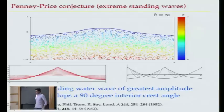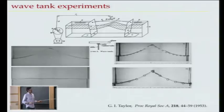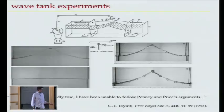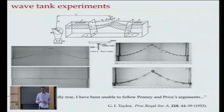Penny and Price picked 90 degrees, but their reasoning wasn't as clear as Stokes's. G.I. Taylor, one year later in 1953, actually built an apparatus to try to generate the singular standing wave, and found that it does seem to make 90-degree angles. But there's a quote in his paper: referring to the 90-degree angles — 'while this is undoubtedly true, I've been unable to follow their arguments.' So it's been an open question for about 60 years whether these standing waves really do form corners.